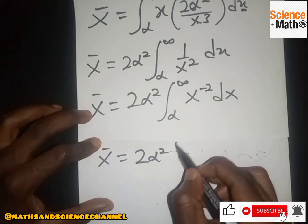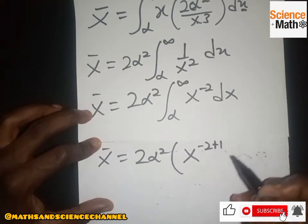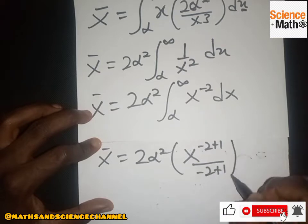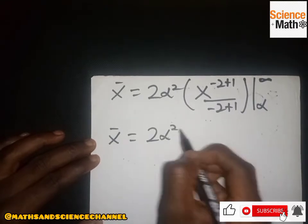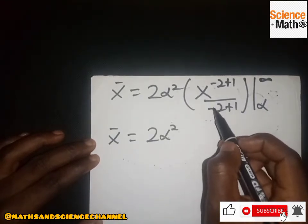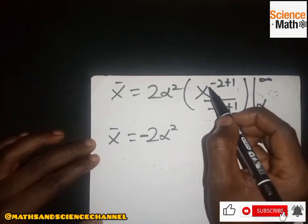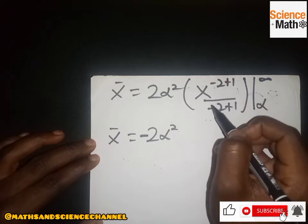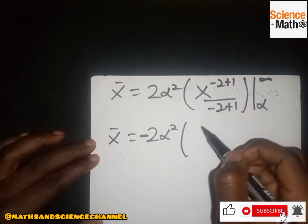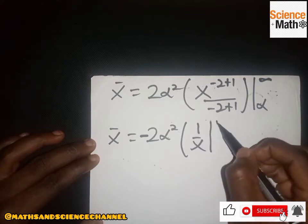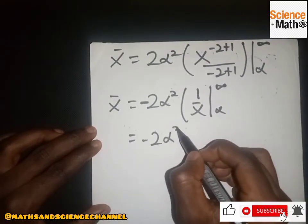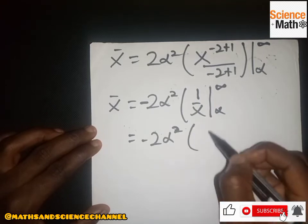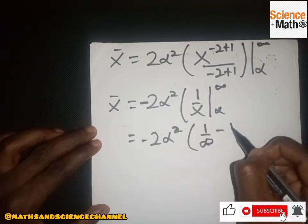To integrate x⁻², we add one to the exponent giving x⁻¹, then divide by the new exponent negative 1. So x-bar equals 2α² times the result evaluated from α to infinity. Bringing out the negative sign, we are left with −1/x evaluated from α to infinity, which gives 2α² times (1/∞ − 1/α).